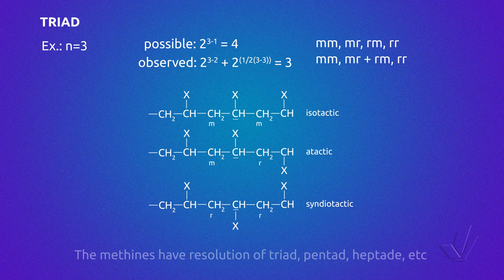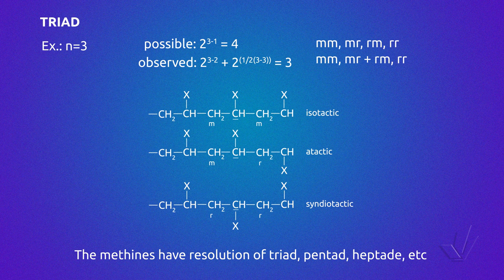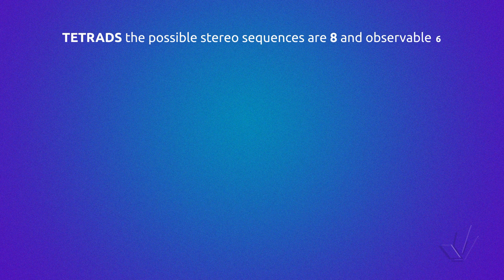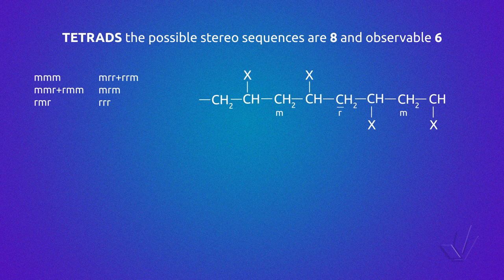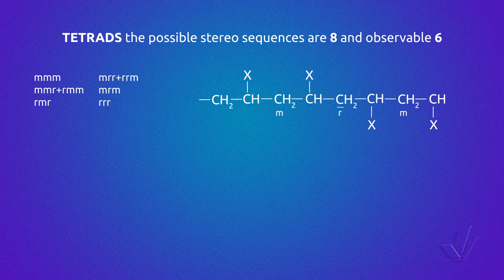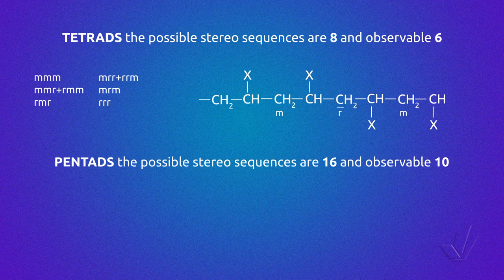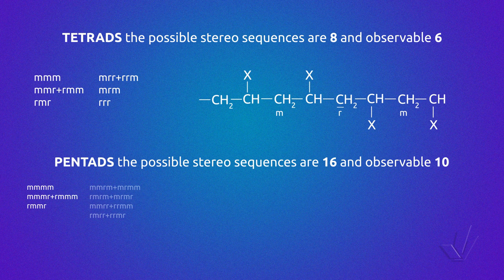Depending on the NMR magnetic field, the methine assigned in this figure can have the resolution of triad, pentad, or heptad. When we have a sequence of 4 units — a tetrad — the possible stereosequences are 8 and the observable are 6. The asymmetric stereosequences MMR or RRM are not distinguishable from RMM or MRR. For the pentad, the possible stereosequences are 16 and observable 10, calculated by the previous equations.